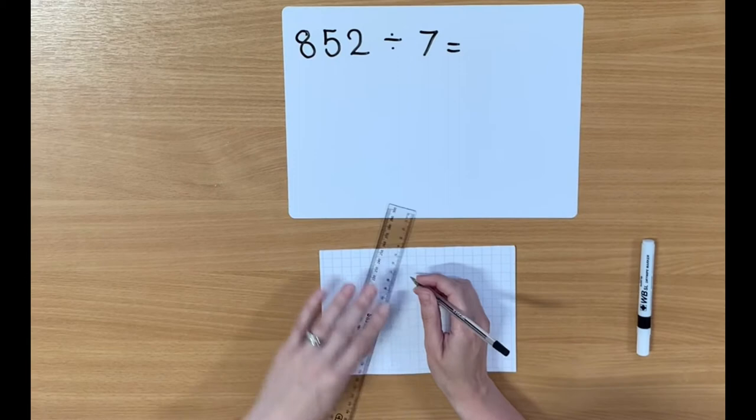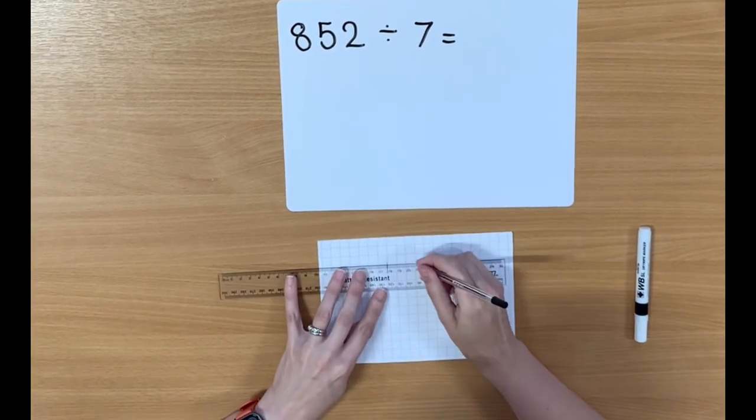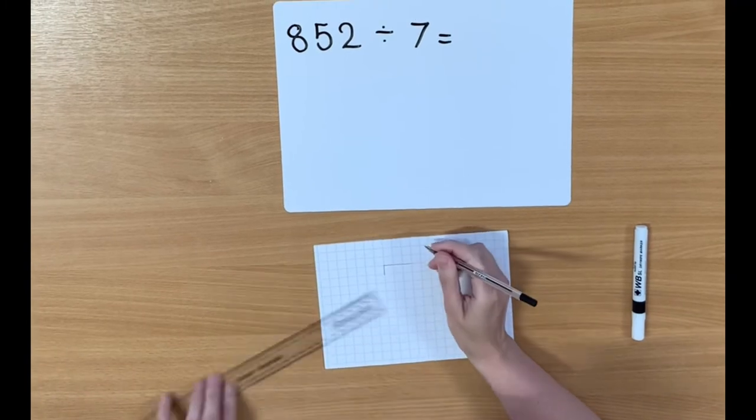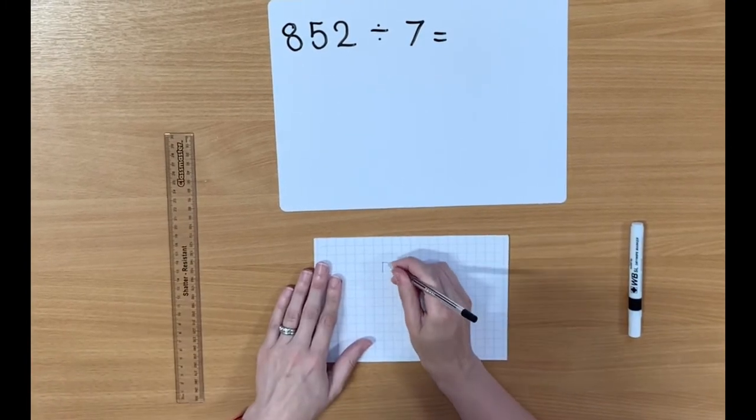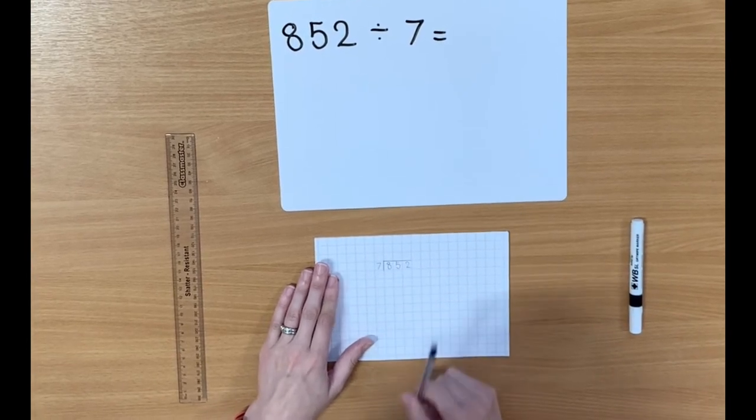So start off by drawing the two lines and writing the number 852 underneath the lines. And then you want to write the number that you are dividing by, which is 7, just on the outside.